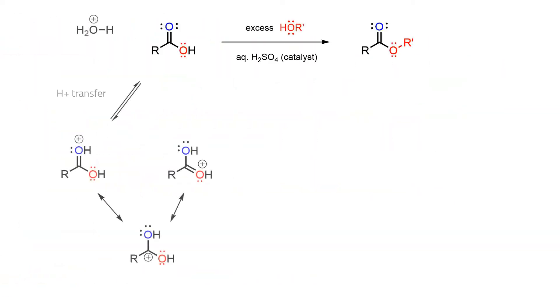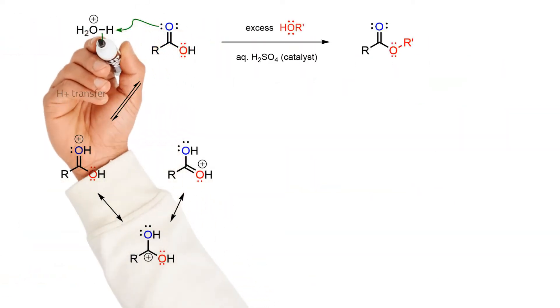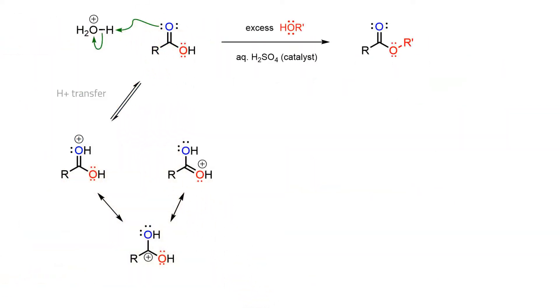The first step of the mechanism is protonation of the carbonyl in the carboxylic acid. This provides a better electrophile, with the enhanced reactivity being represented by the carbocationic resonance structure.